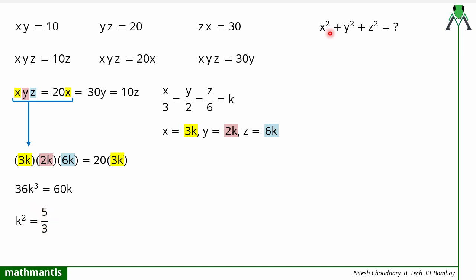Now we have to find the value of x² + y² + z². I will put these values in terms of k here. You will get (3k)² + (2k)² + (6k)², which is 9k² + 4k² + 36k². So that value will come out to be 49k².